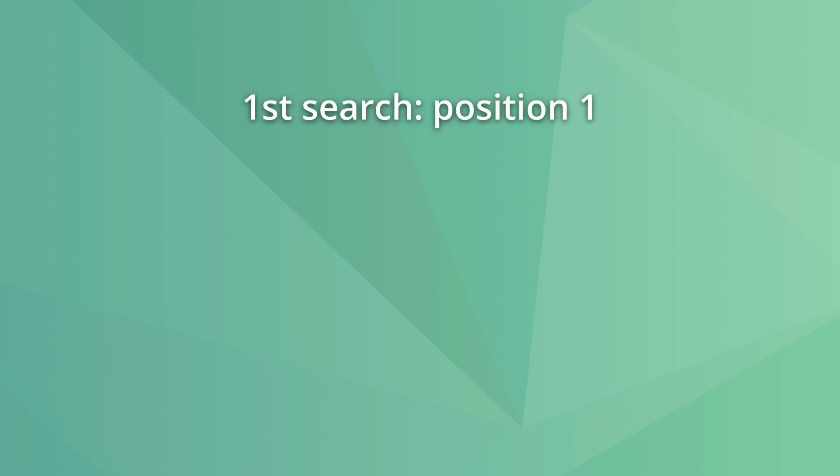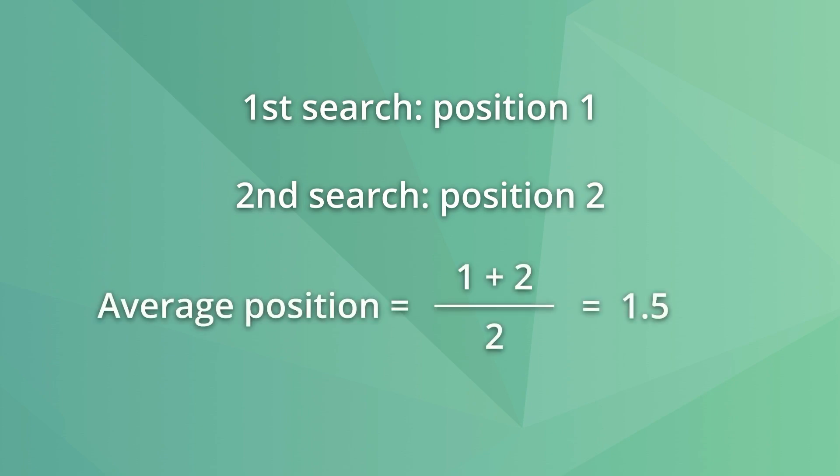For example, if a user types 'SEO testing' and our site ranks on position 1, then another person does the same search and we appear on position 2, our average position would be 1.5. It's worth remembering that localization and personalization affect the SERPs, and different people will see the search results in a different order, which is taken into account for your average position.